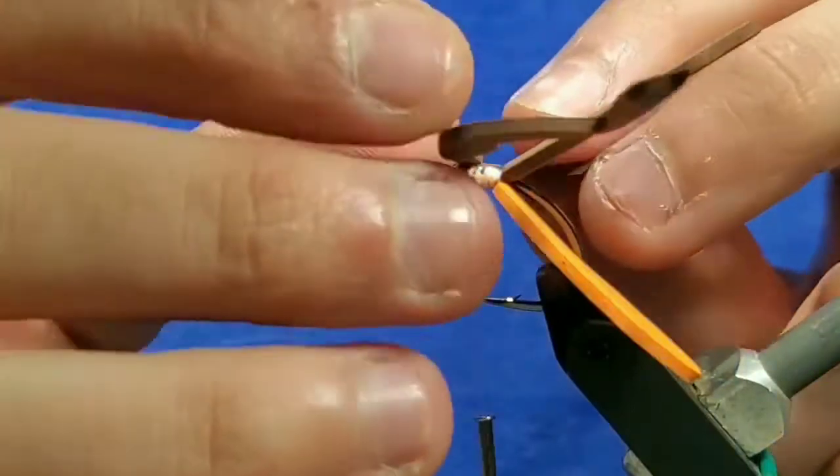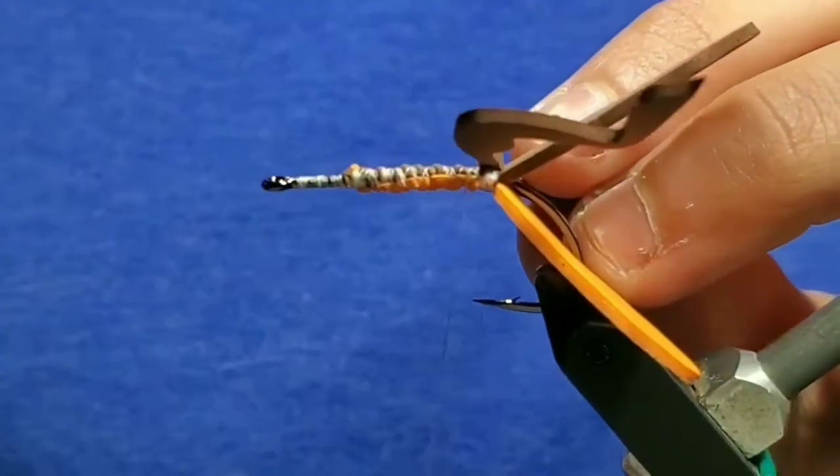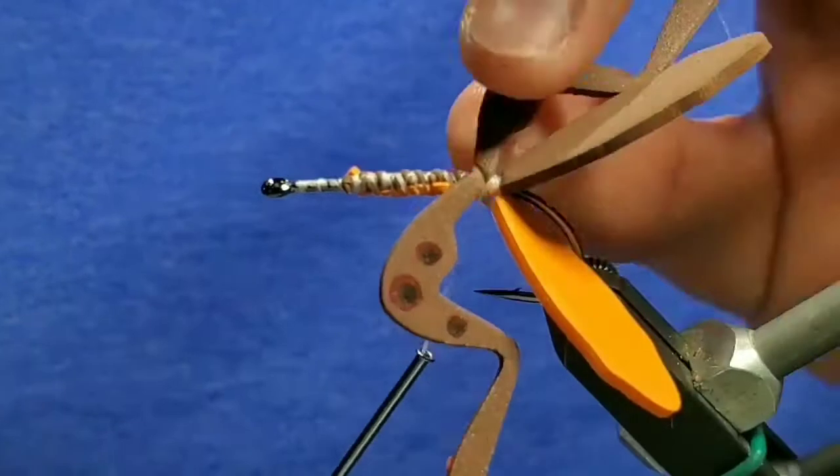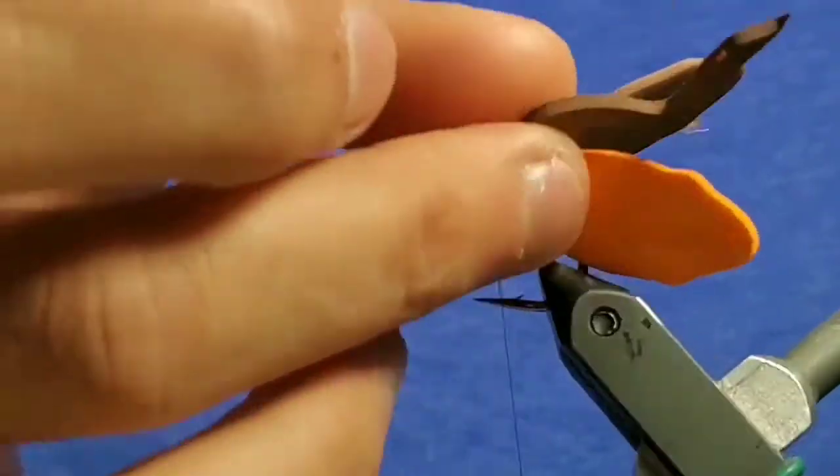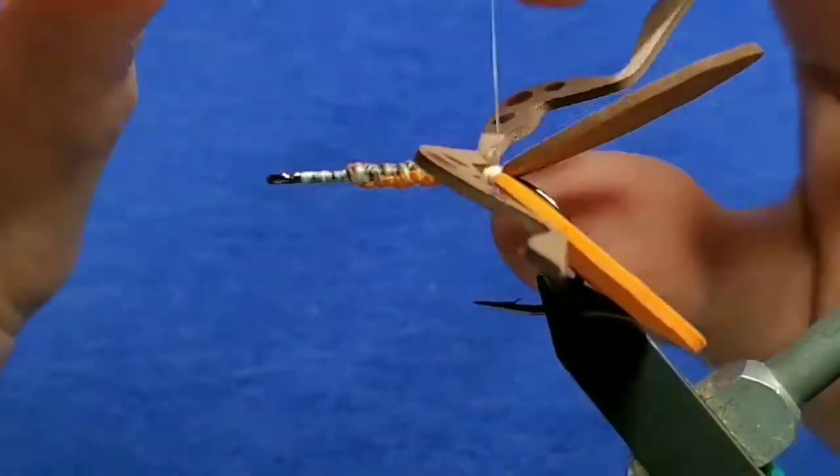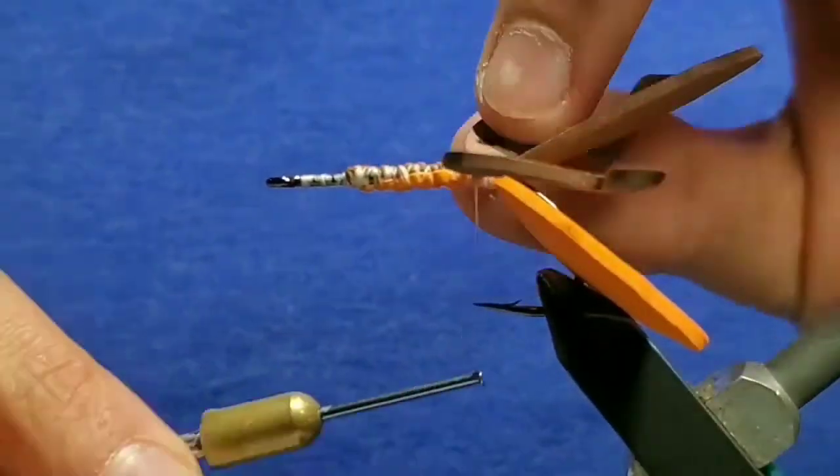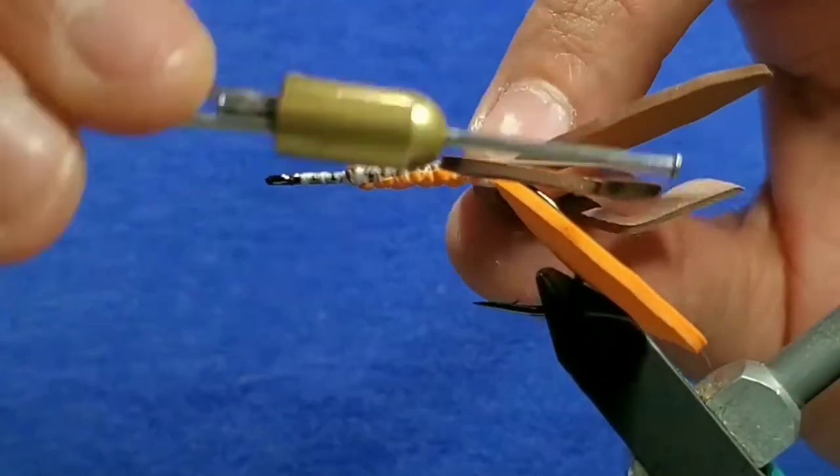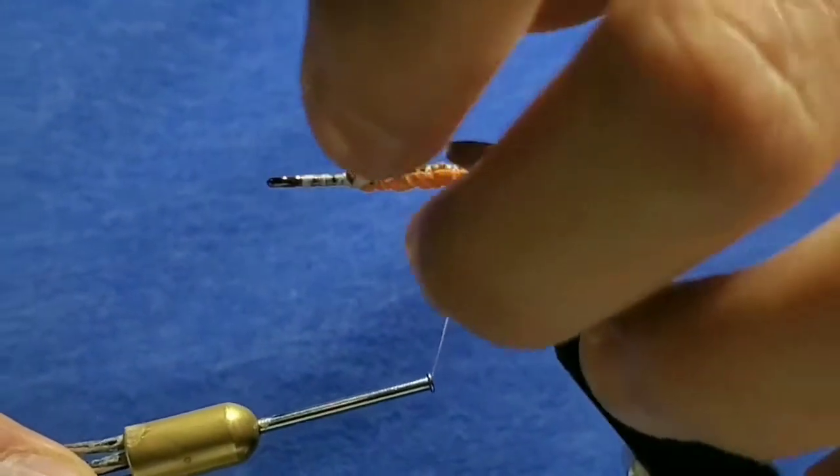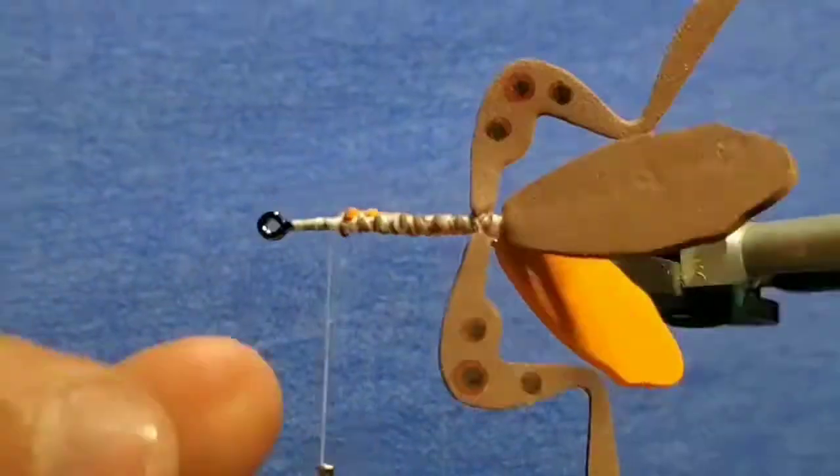Bring the legs up to your hook. Put them towards the back end of the fly and go ahead and use crisscross wraps to secure them on top of the hook shank. Make sure to keep them bending back in an orderly fashion. Then bring your thread up towards the eye.